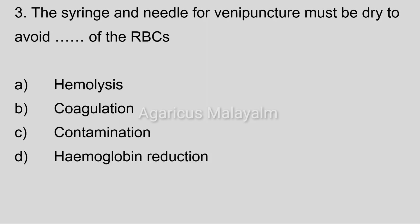Third question: The syringe and needle for venipuncture must be dried to avoid what in the RBCs? Option A: Hemolysis. Option B: Coagulation. Option C: Contamination. Option D: Hemoglobin reduction. Correct answer: Option A, Hemolysis.